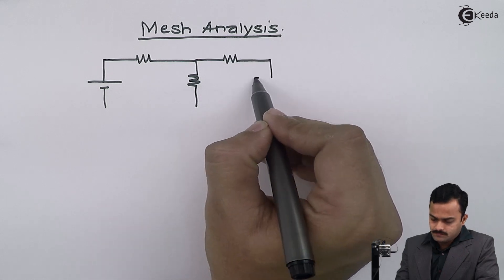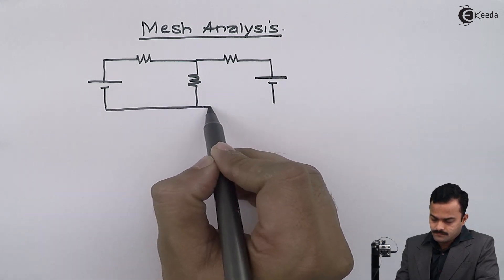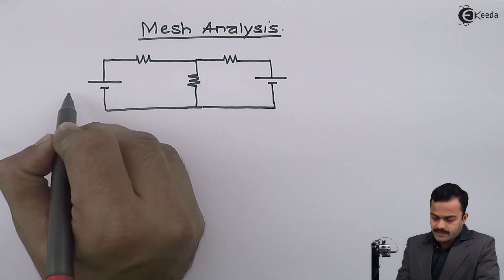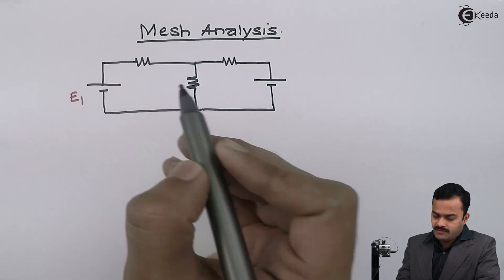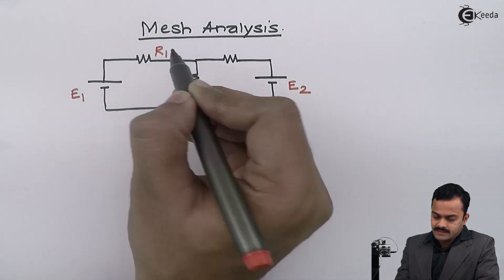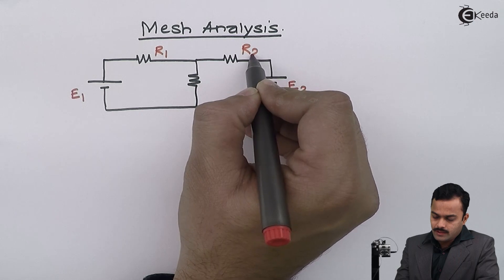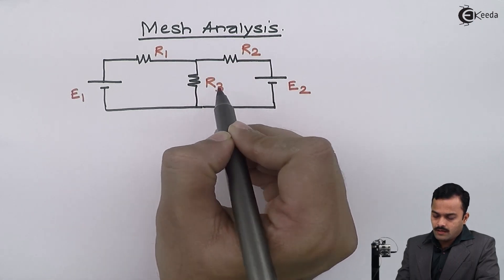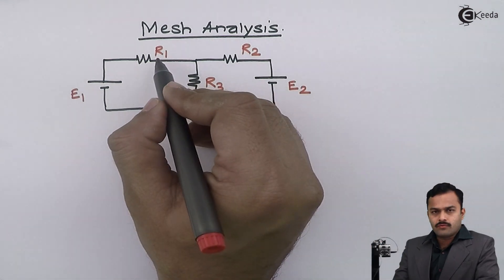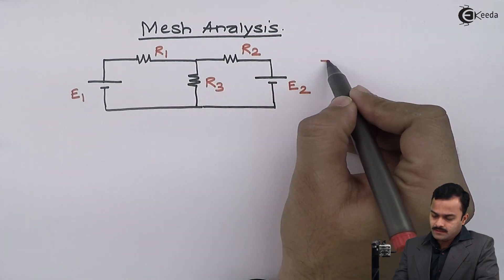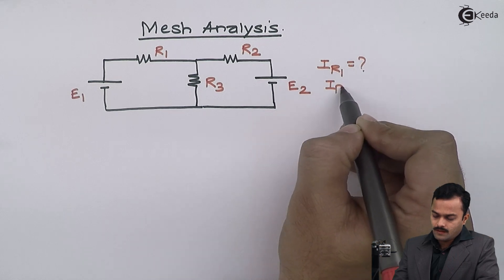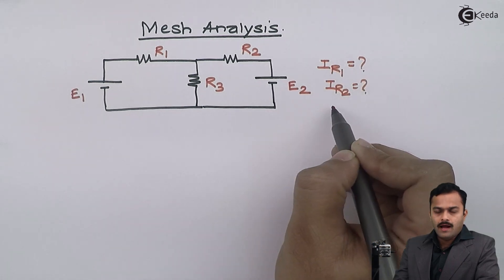The network has two loops. I will consider all generalized values — for the batteries, EMF is E1 and E2, and the resistances will have values R1, R2, and R3. The objective is to find out the current flowing through all of them: IR1, IR2, and IR3.